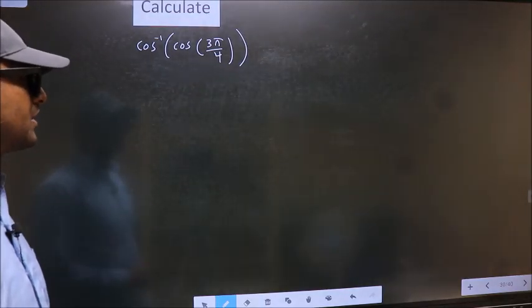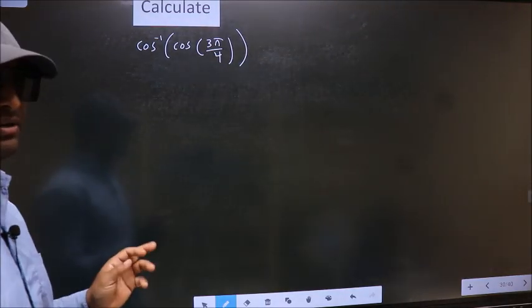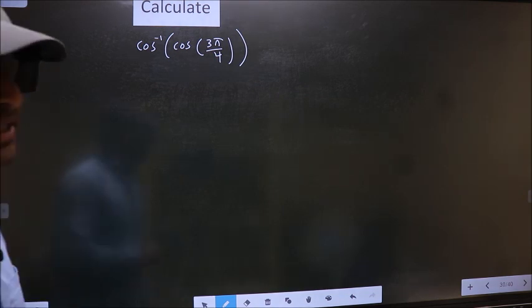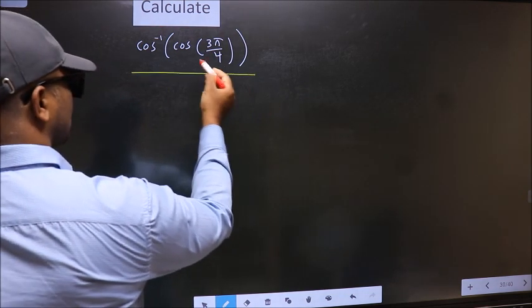Calculate cos inverse cos 3 pi by 4. How do we calculate this? We should get the answer to this one.